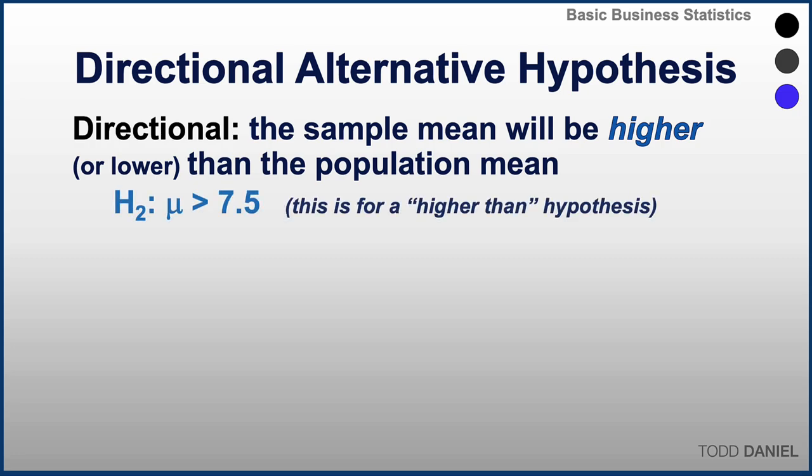I could write this alternative hypothesis as H sub 2 colon mu greater than 7.5. This sample is drawn from a population that has a population mean greater than 7.5. A directional alternative hypothesis is sometimes called a one-tailed test, because we're interested in only one tail of the normal distribution.